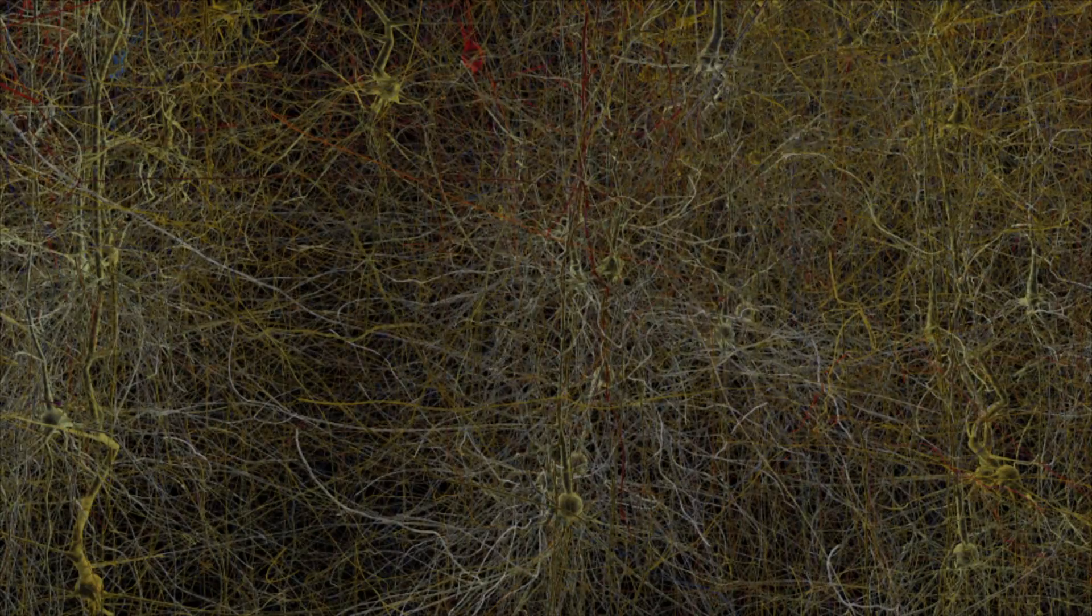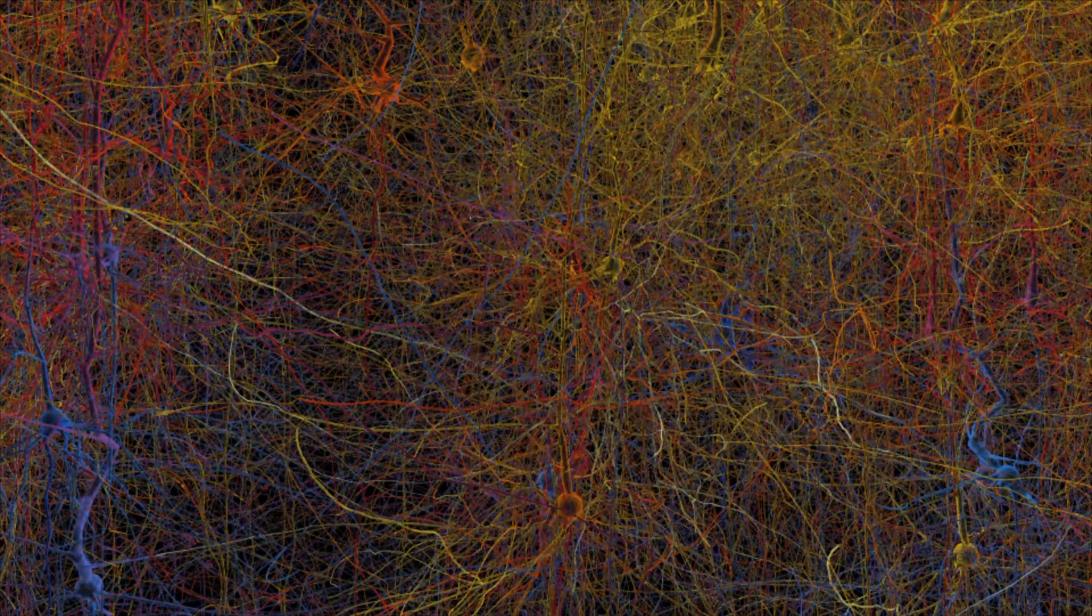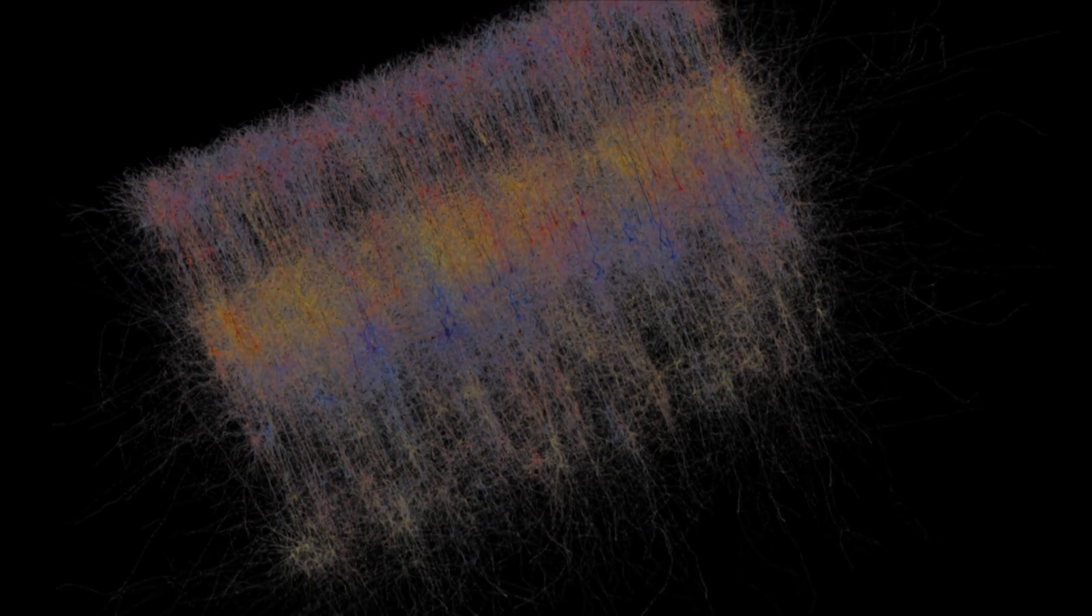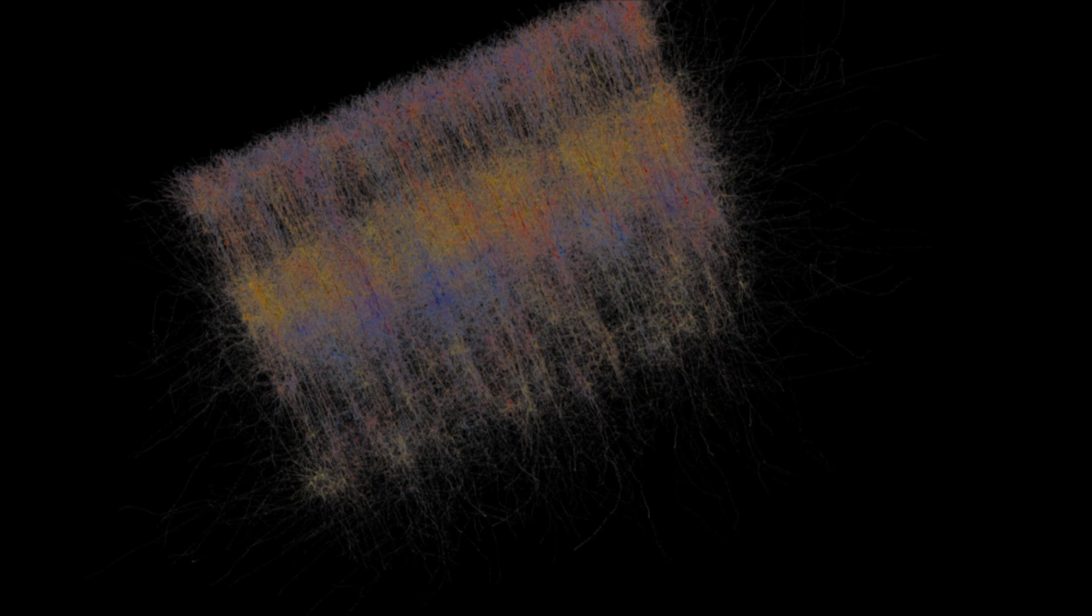The platform will integrate all of our knowledge and data into unifying models spanning the brain's different levels of organization. We'll simulate the behavior of these models on powerful supercomputers and steadily improve them with new data as it becomes available. The Human Brain Project's neuro-robotics platform will couple the simulations to virtual robots.